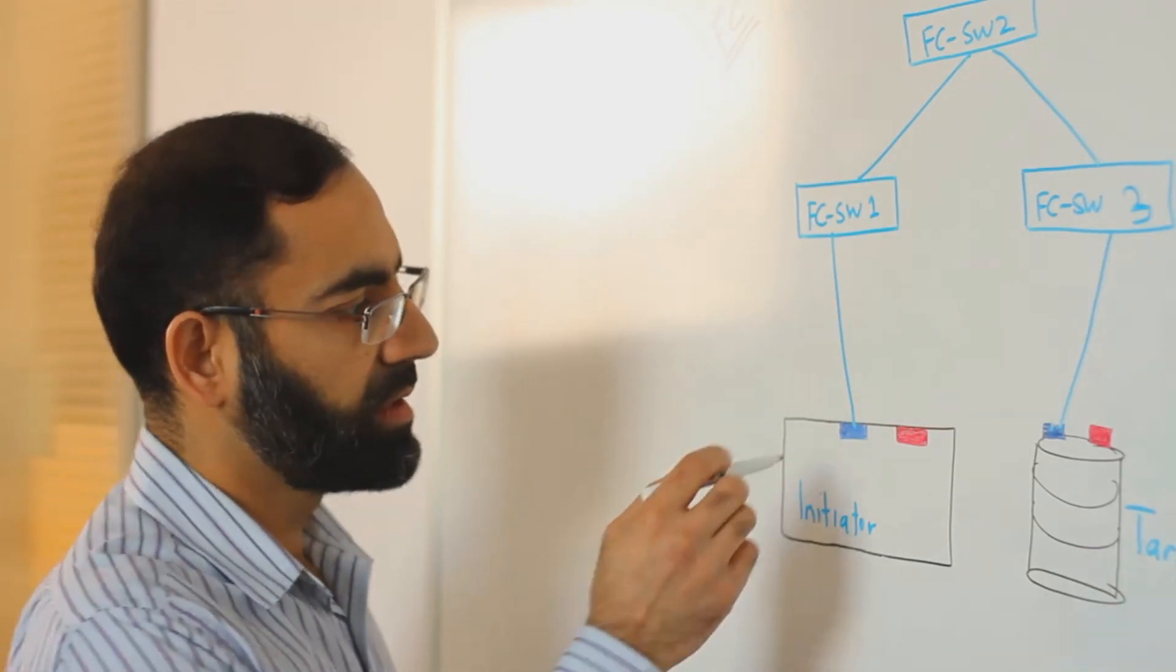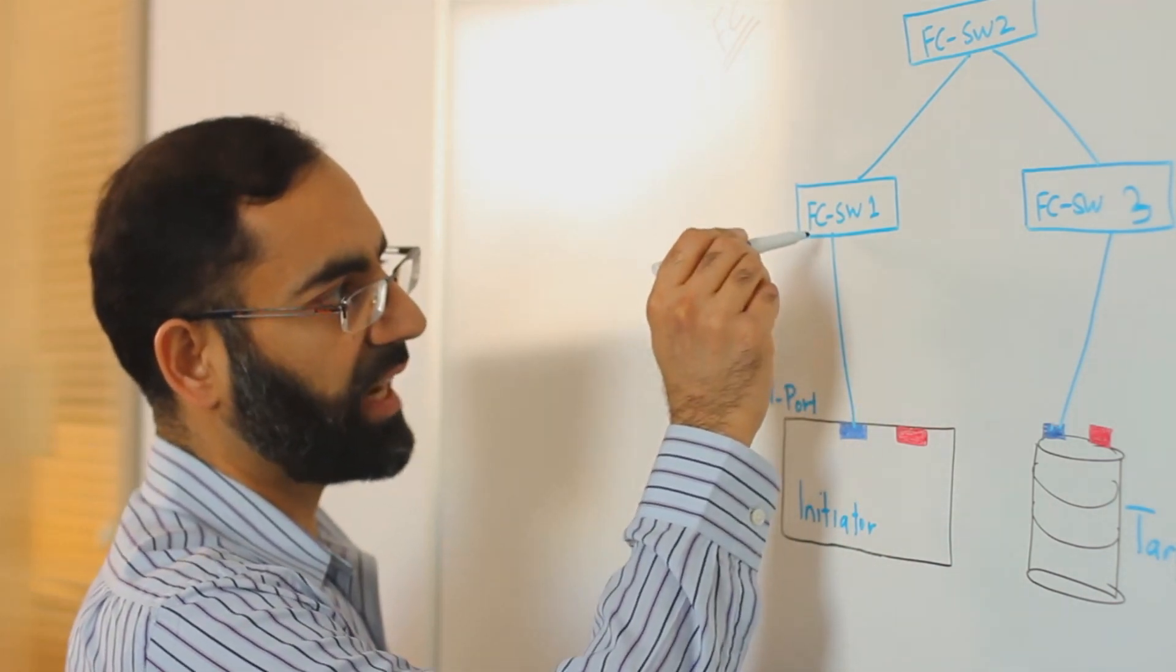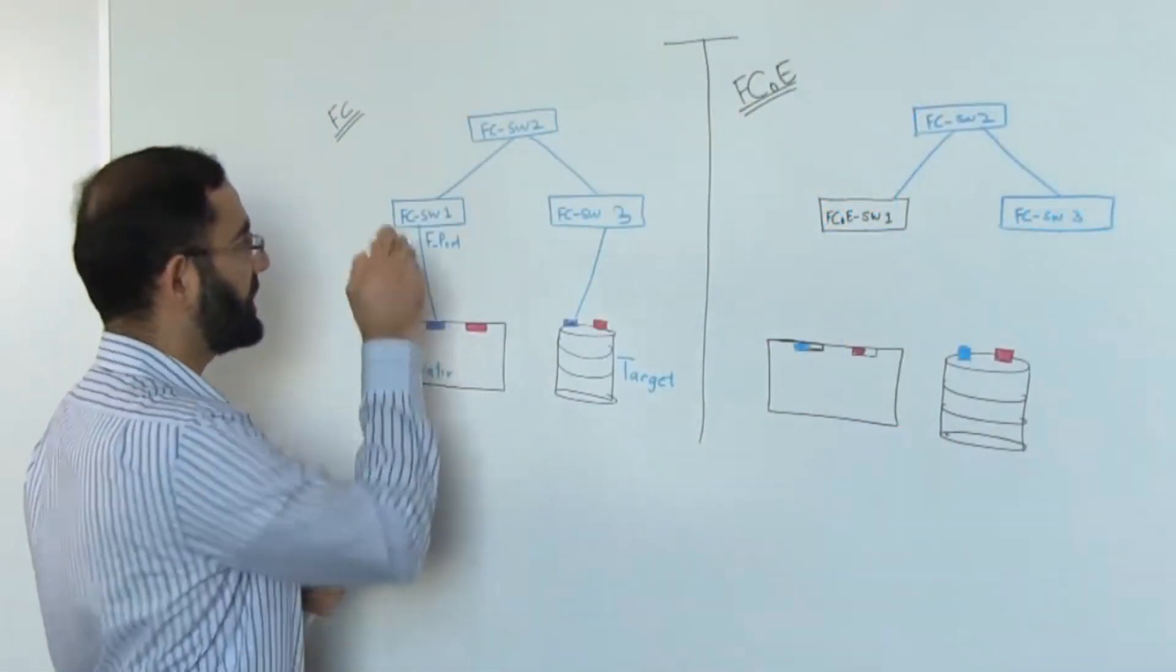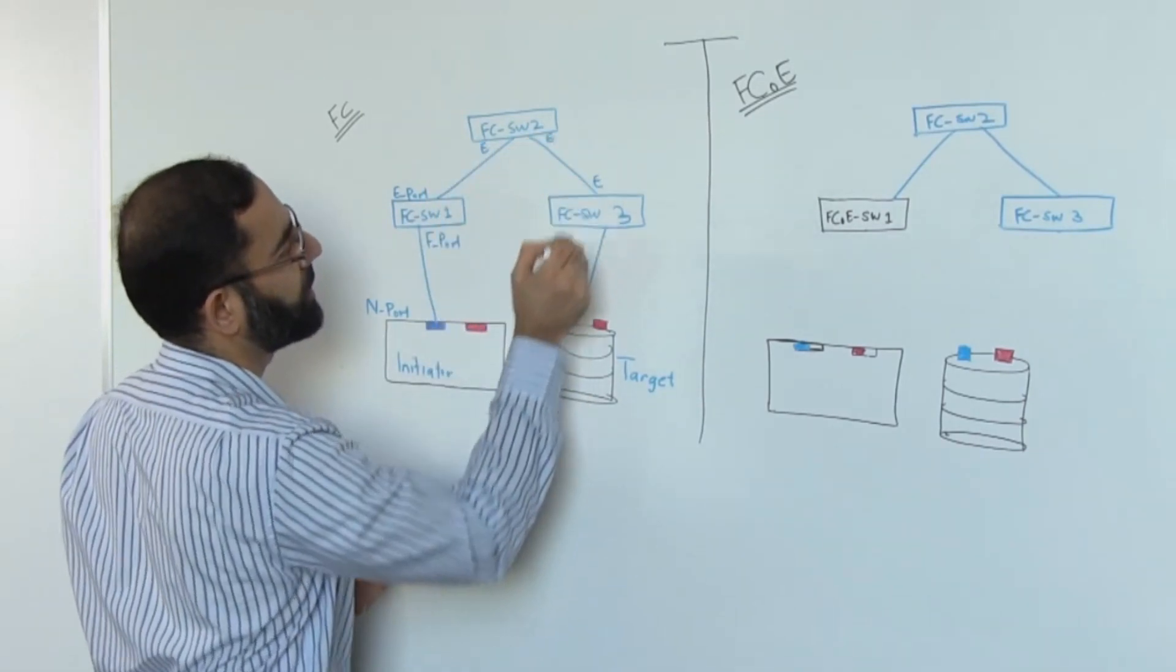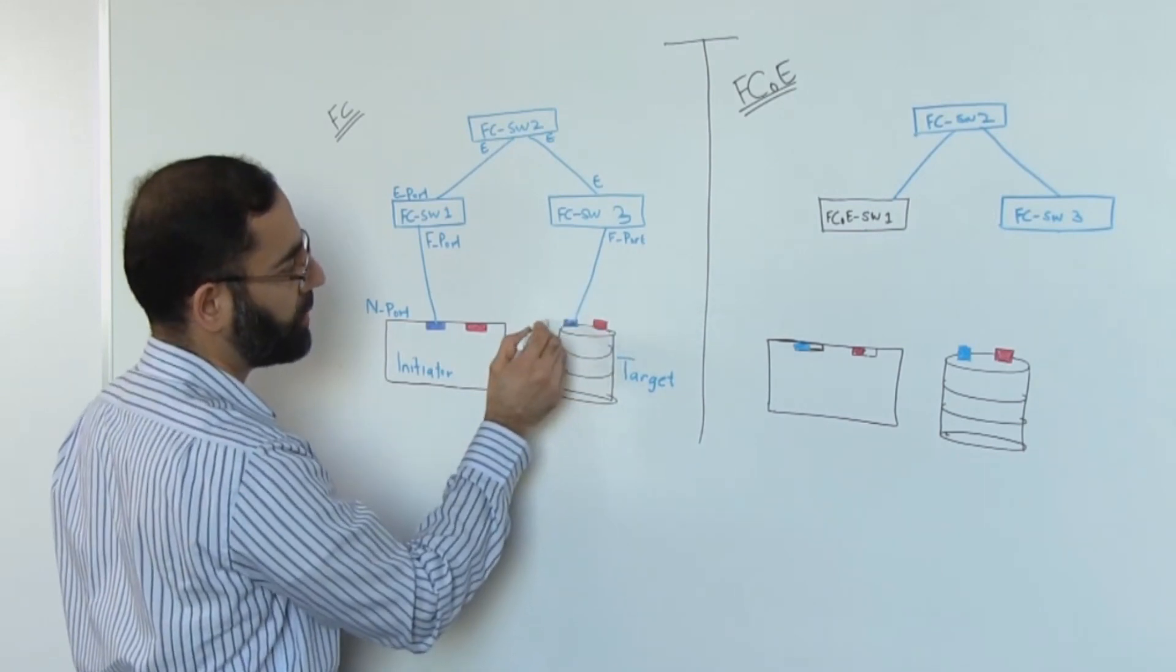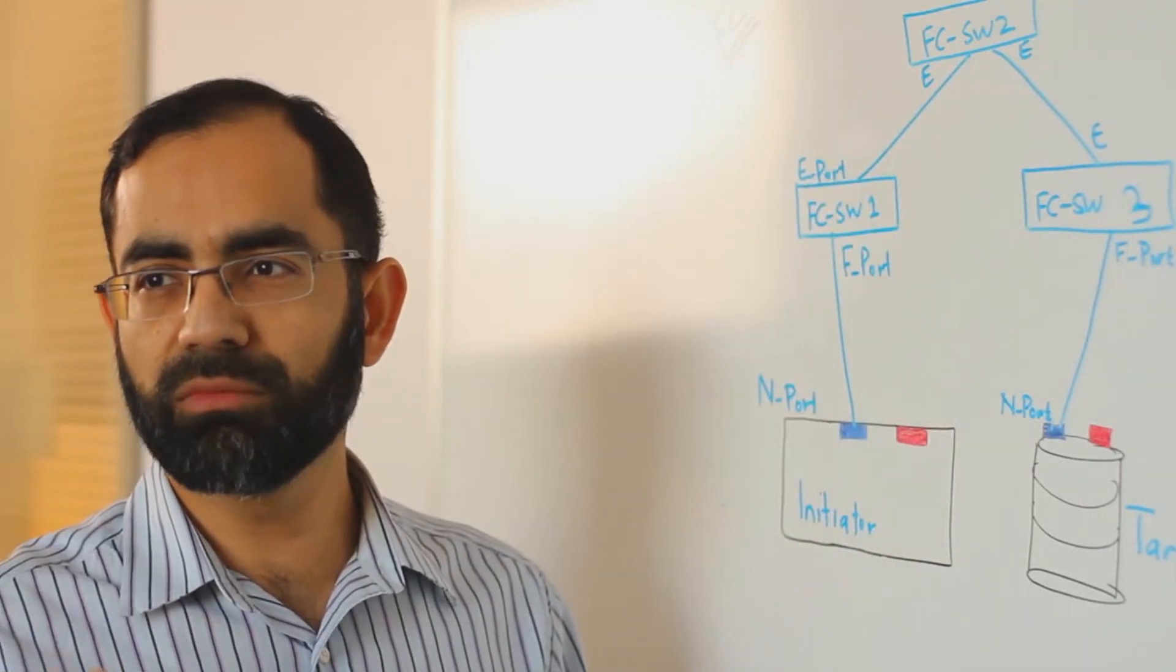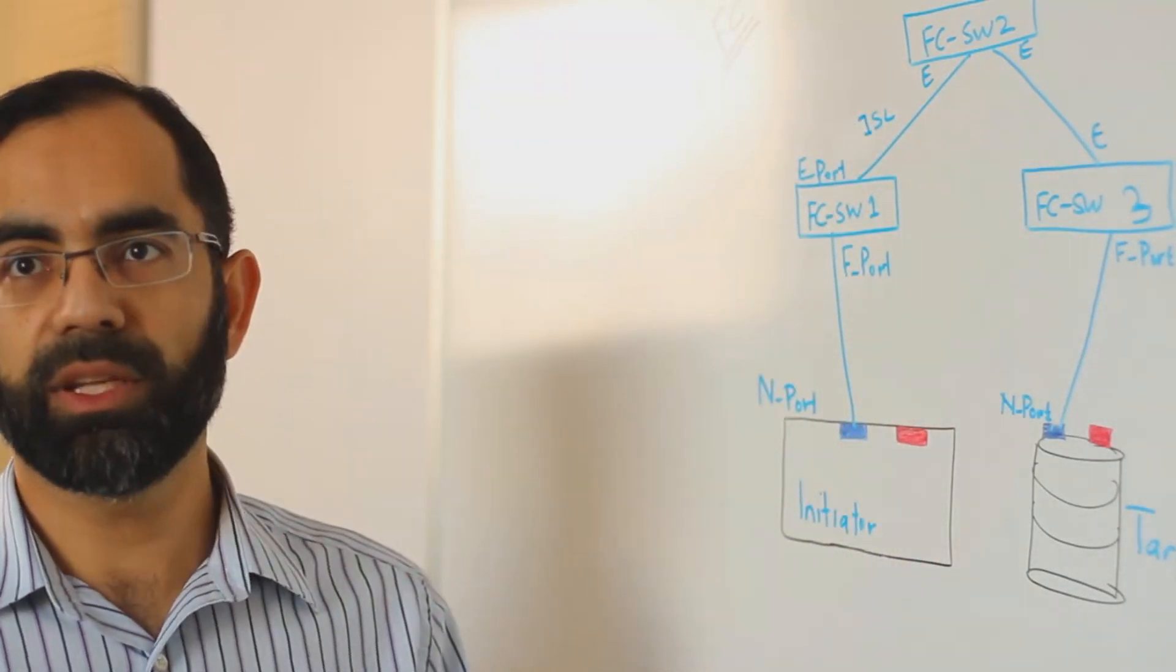In an FC environment, server port is called an N port or node port. Switch side, or the port of the switch which is connected to the N port, is referred to as fabric port or F port. The port which is connected to another FC switch is called E port. On the edge switch, we have F port because this is connected to the N port represented by the storage target. E port to E port connection has a unique identity in the FC world and it is called an inter-switch link, and we'll cover more about this in detail in future sessions.